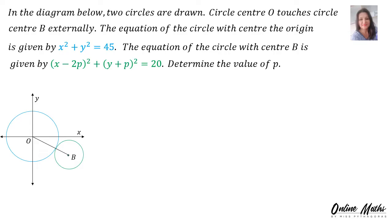Example 2. In the diagram below, two circles are drawn. Circle center O touches circle center B externally. The equation of the circle with center at the origin is x² + y² = 45, where 45 is r². The equation of the circle with center B is also given, where 20 is r². Determine the value of P. Since the equation of the circle is in center-radius form, we can say that B's coordinate is the point (2P, -P), and that is what we're looking for.